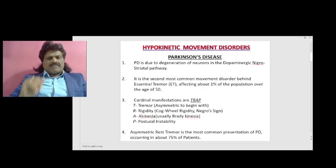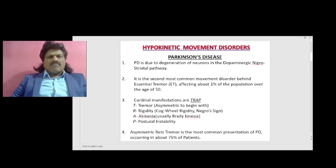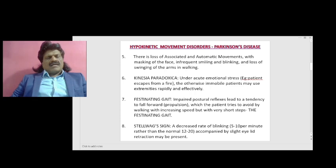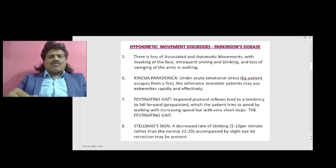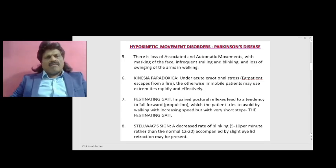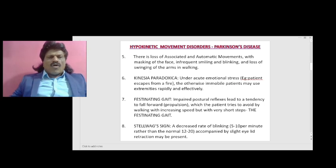Asymmetric resting tremor is the most common presentation of Parkinson's disease, occurring in about 75% of patients. There is also a loss of associated and automatic movements — for example, arm swing when walking, masking of the face, infrequent smiling, and blinking, and loss of arm swinging while walking.